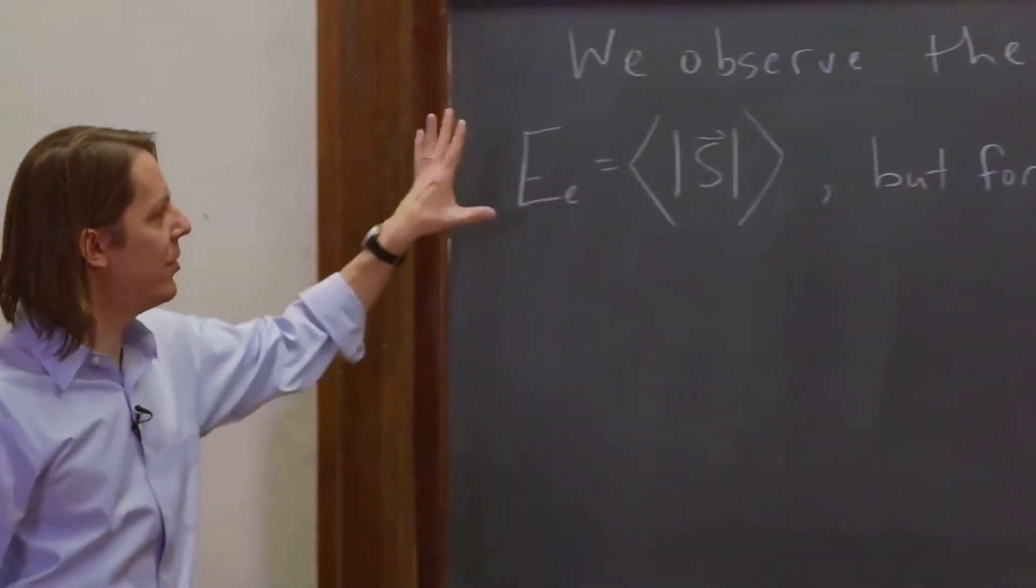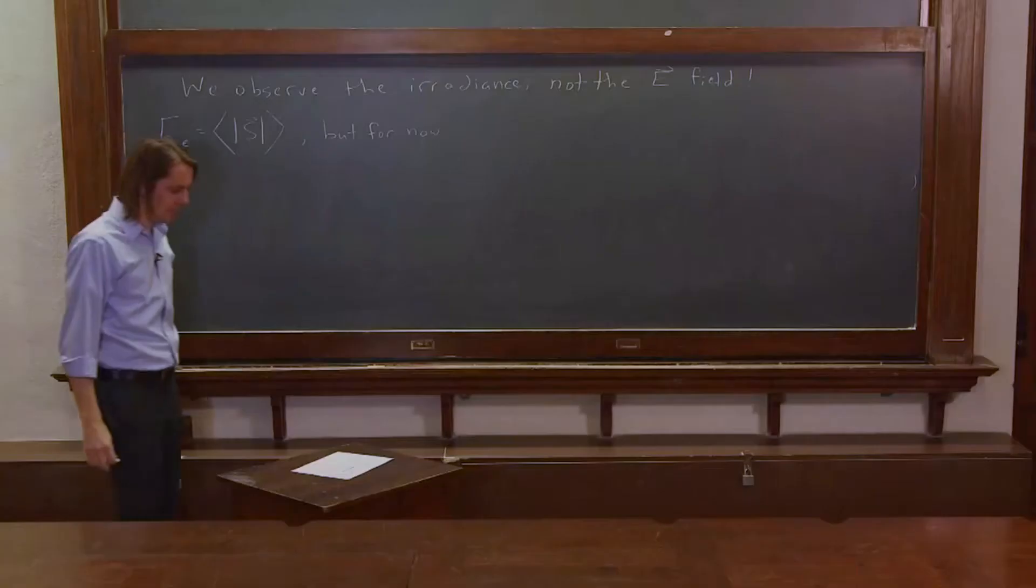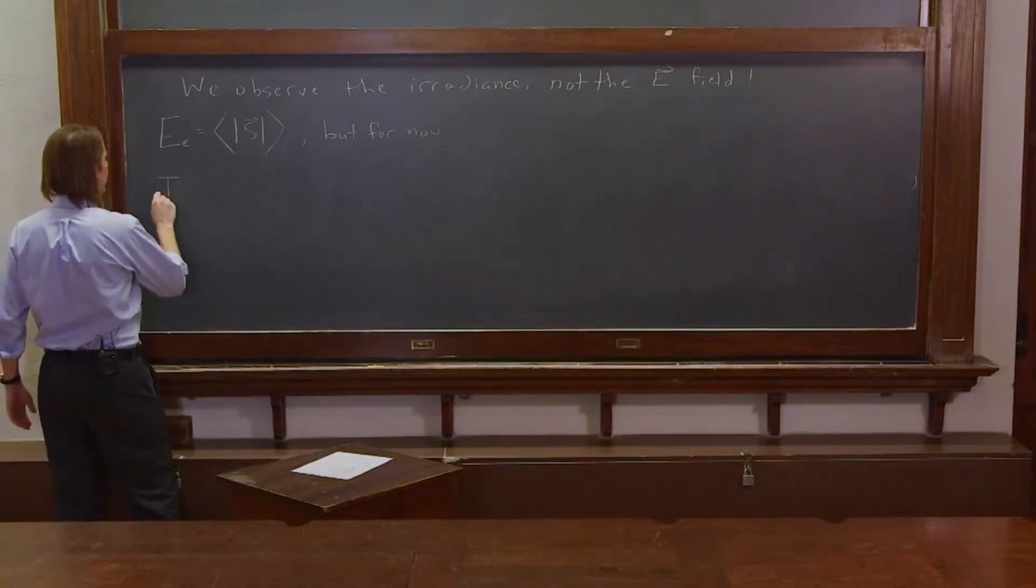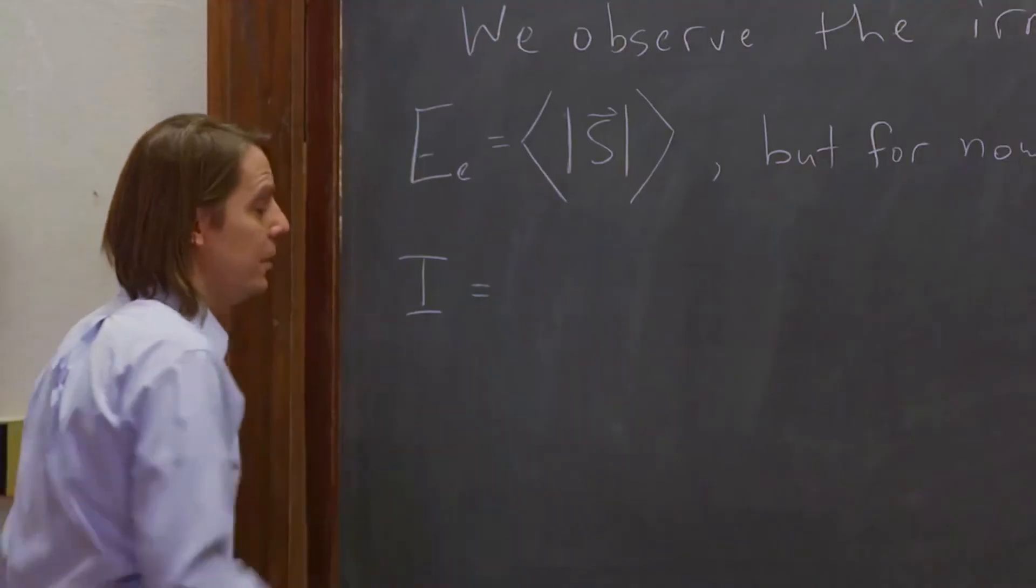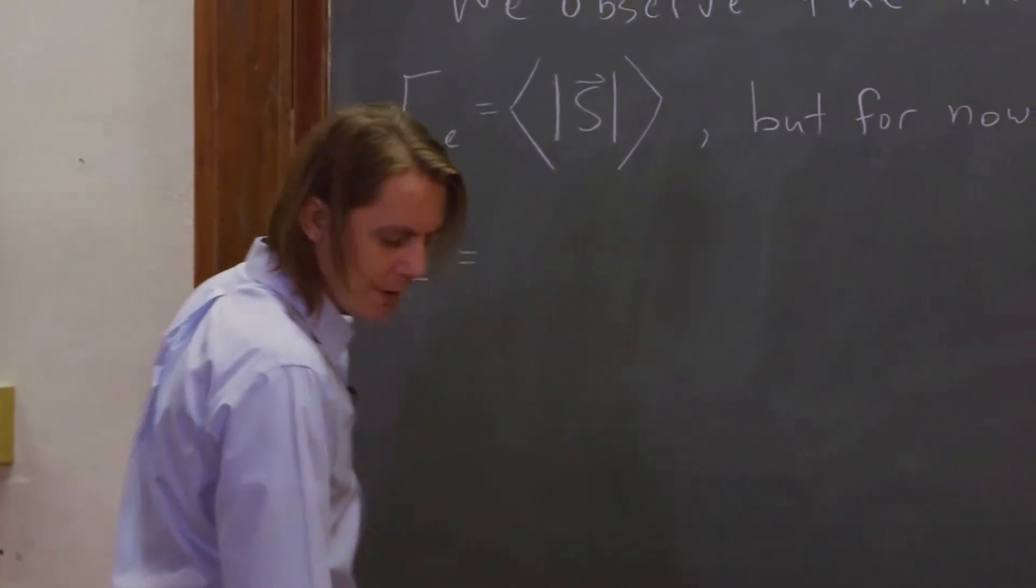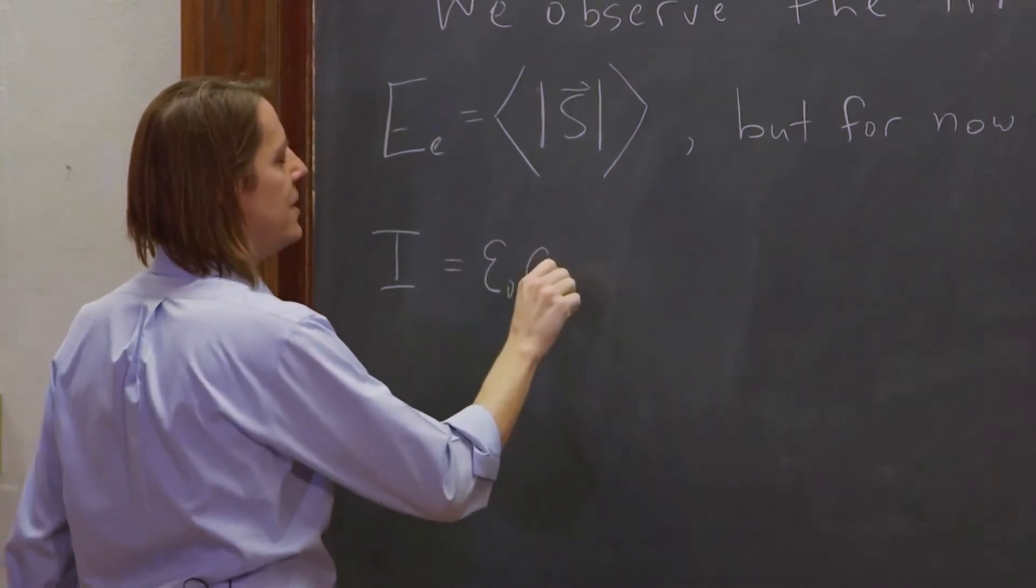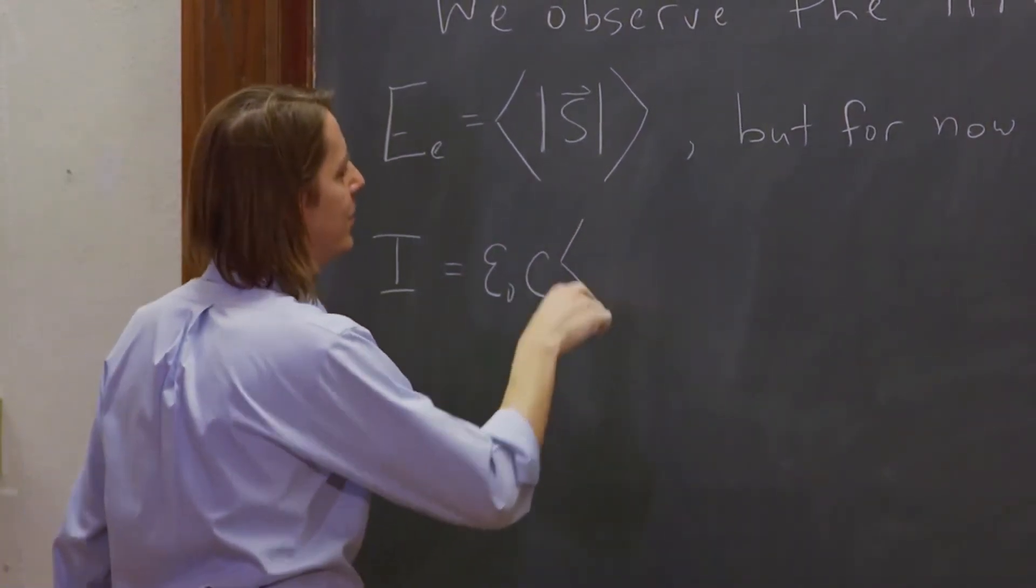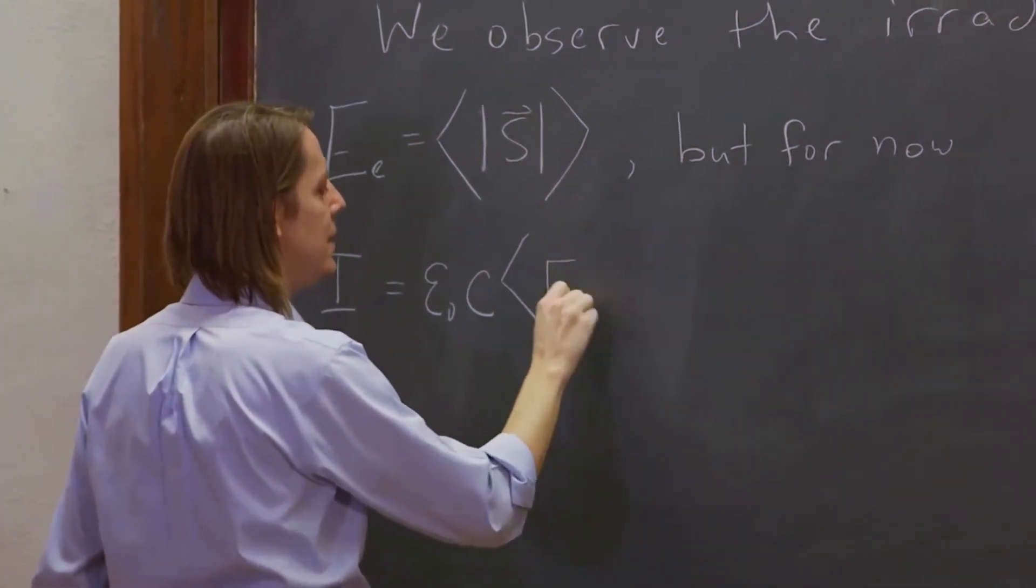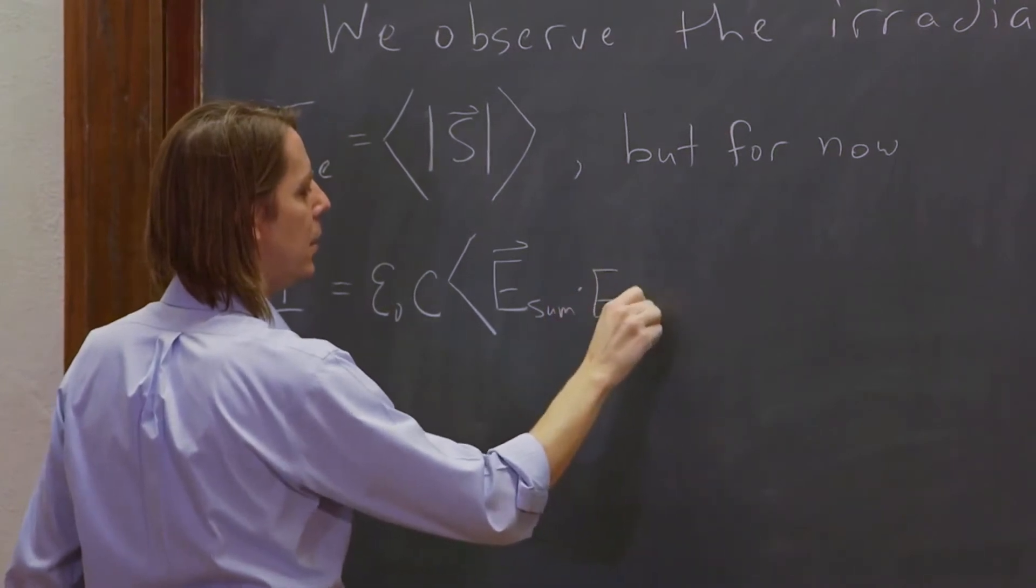Most optics books do this. If you call it E_E, and then you start calculating electric fields, there's too many E's everywhere. So for now, we're going to break the technical rules and call it I. It's one way we're going to break the rules. And the other is we're going to write it like this. We're going to call it epsilon_0 C.